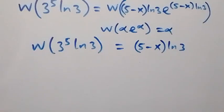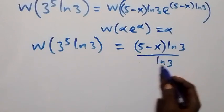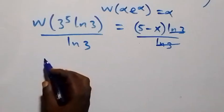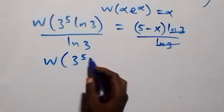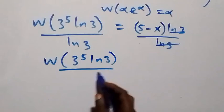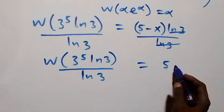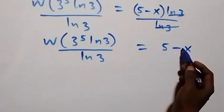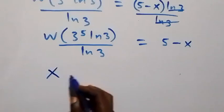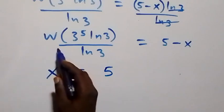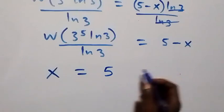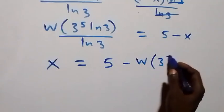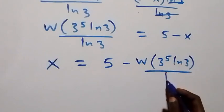From here we divide both sides by ln three. Dividing by ln three, we are left with W of three raised to power five times ln three, over ln three, which equals five minus x. Since we are finding x, let's take minus x to the left hand side, which becomes plus x, equals five, then taking W of three raised to power five times ln three over ln three to the right side it becomes minus. So x equals five minus W of three raised to power five times ln three, divided by ln three.